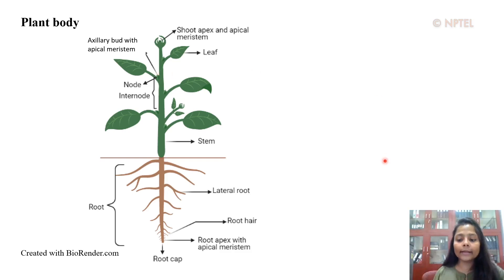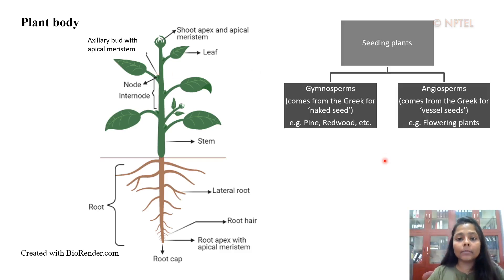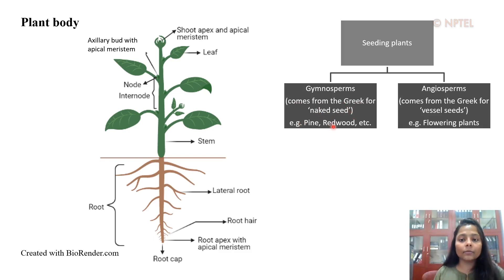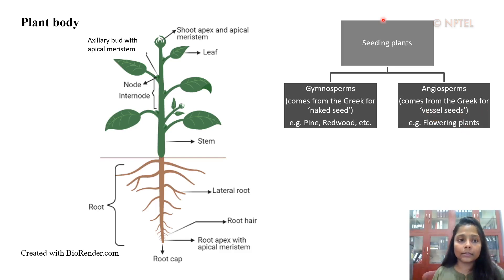You can categorize all seeding plants into two different groups: the gymnosperms and the angiosperms. The word gymnosperm comes from the Greek for naked seeds, implying these are the non-flowering plants, e.g. pine, redwood, etc. The term angiosperm comes from the Greek for vessel seeds, which means that these are the flowering plants.